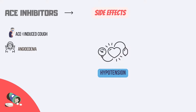Hypotension is a side effect of any blood pressure-lowering drug. People who are susceptible to this side effect include those with severe volume and/or sodium depletion, ischemic heart disease, cerebrovascular illness, hyponatremia, high-dosage diuretic therapy, renal dialysis, and heart failure with a systolic blood pressure less than 100 mmHg.